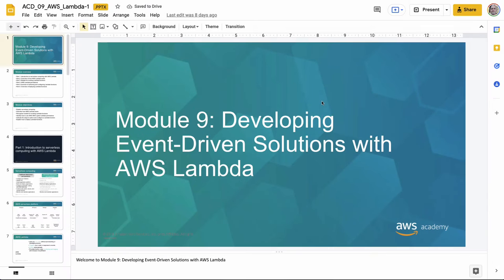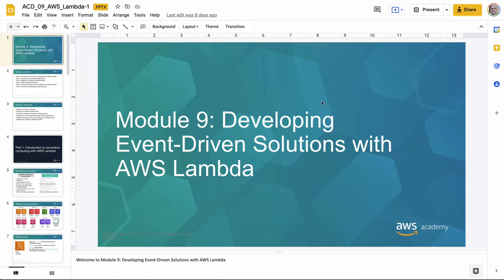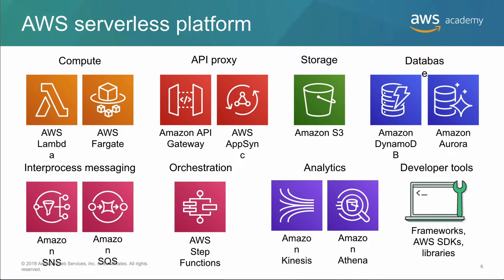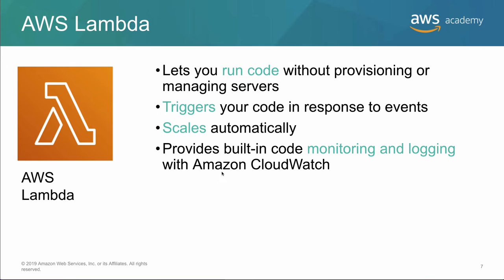It'll take us a little under an hour. With AWS, event-driven programming is one of the key advantages. With serverless computing, this is really the final destination for building services. You can do AWS Lambda, Fargate, API gateways, and communicate with storage systems. AWS Lambda specifically lets you run code without provisioning or managing servers. You can trigger the code in response to events and it scales automatically.